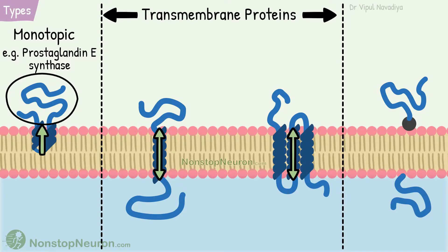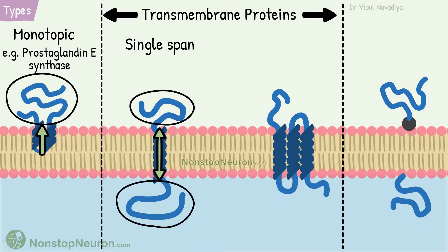Some proteins span the bilayer. Such proteins are called transmembrane proteins. Some of them span the membrane only once — they are called single-pass or single-span transmembrane proteins. Such proteins have two segments outside the membrane and are also called bitopic proteins. For example, the insulin receptor is a single-pass transmembrane protein.